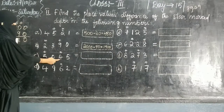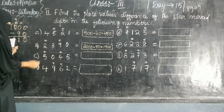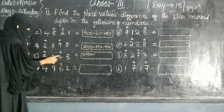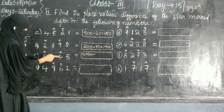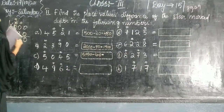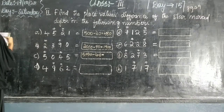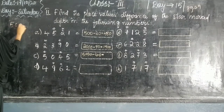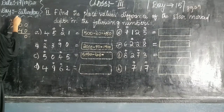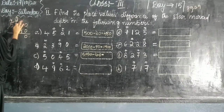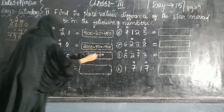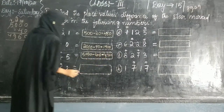Five thousand and forty-five. The star mark digit gives a place value of 5000. We write 5000 minus 40. Here 10, 10 minus 4 equals 6. The digits are: 4, 9, 6, 0. The answer is 4960.